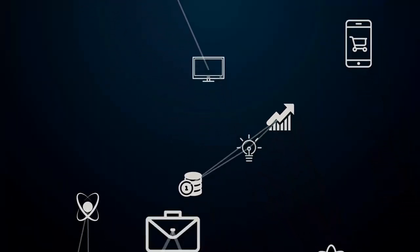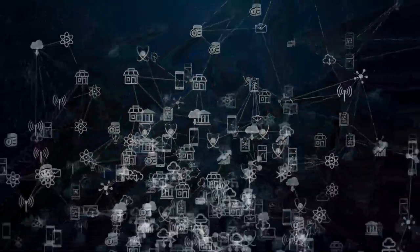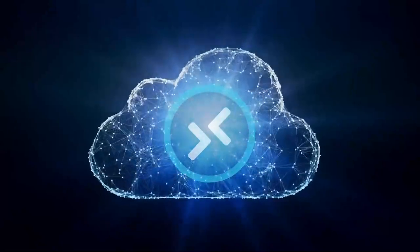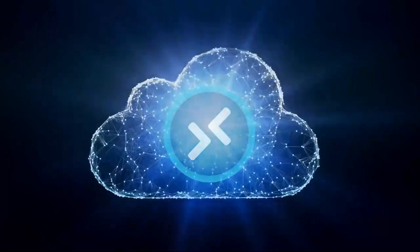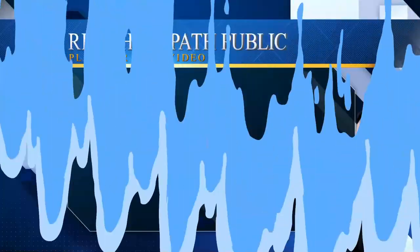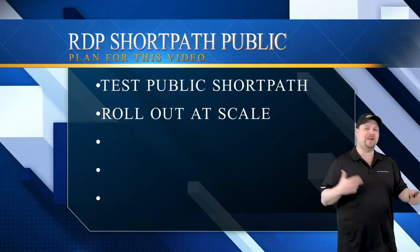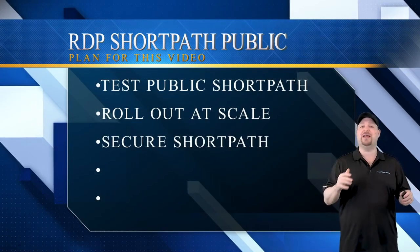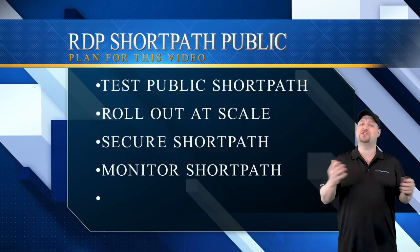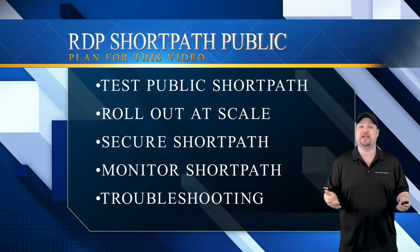Up until now, RDP ShortPath was only allowed on private connections like over an Express Route or a VPN, but as of today, all that changes. Now you can use RDP ShortPath over the public internet to achieve lower latency to your AVD environments. I'll show you step-by-step how you can test it, different options to roll it out at scale, how to secure it, and how to monitor to know that your users are actually using it.